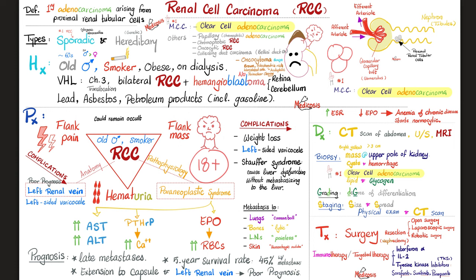Types of renal cell carcinoma: sporadic and hereditary. Hereditary is genetic — it runs in the family; my dad and grandpa had it. Sporadic means everyone in the family was fine and I am the first person to develop renal cell carcinoma — it developed de novo, out of the blue.